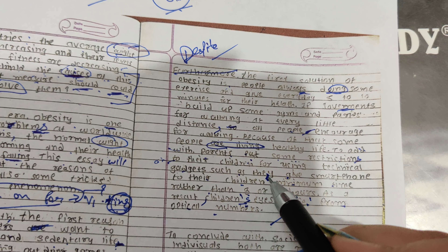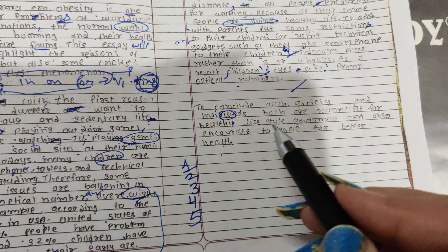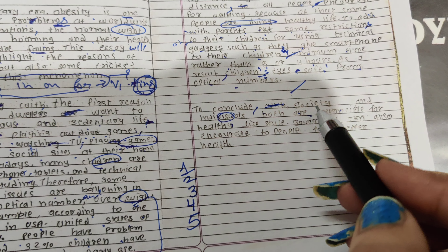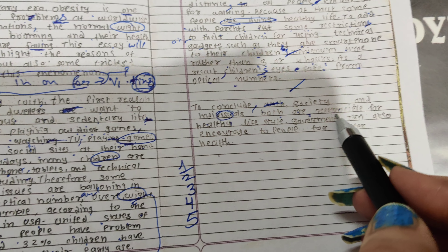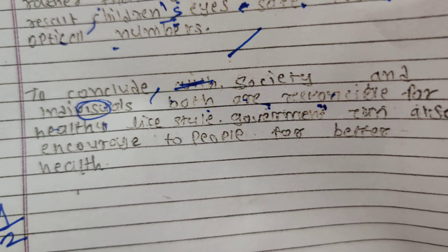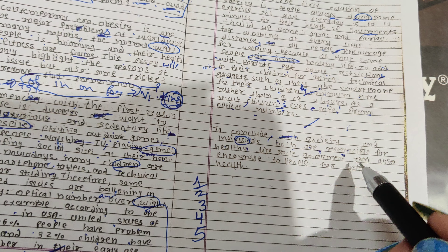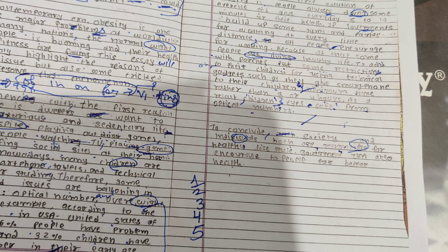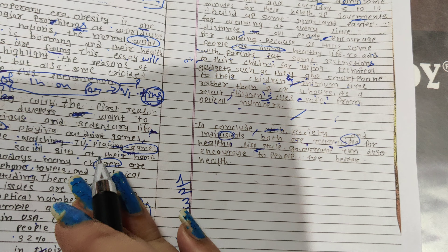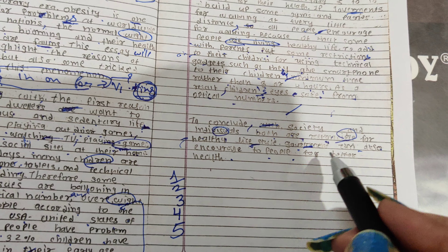To restrict children to minimal time for gadgets. To conclude, both society and individuals — 'individual' spelling is wrong — are responsible. Both are responsible for a healthy lifestyle, and the government can also encourage people for better health.